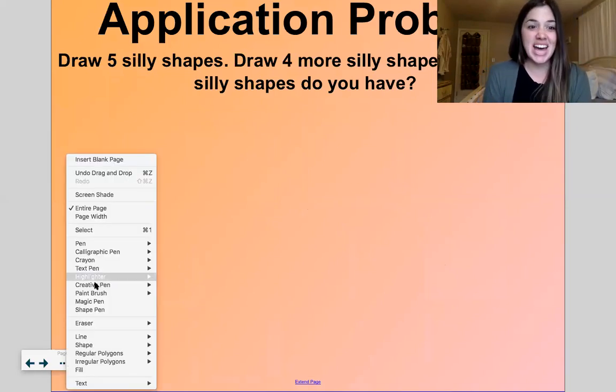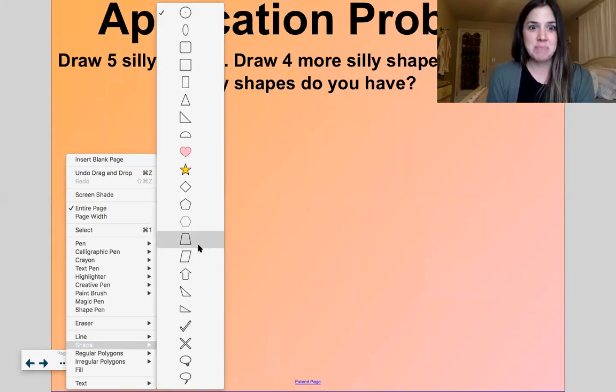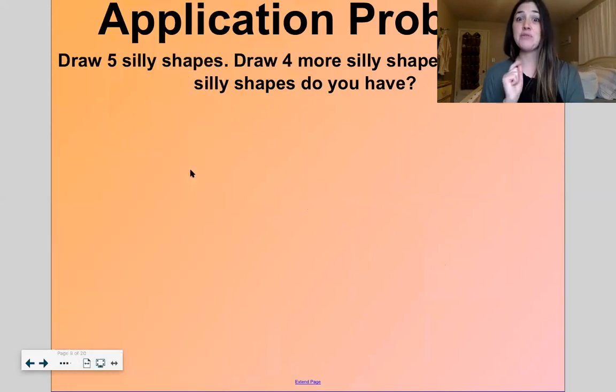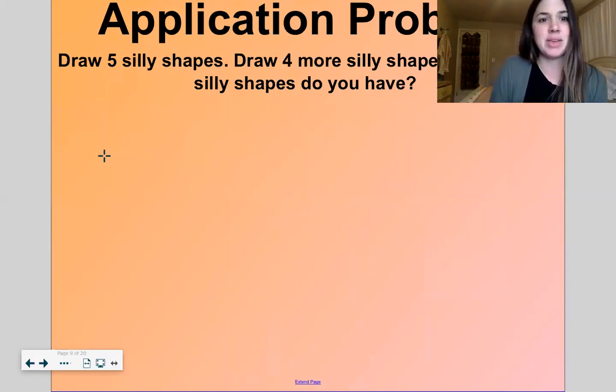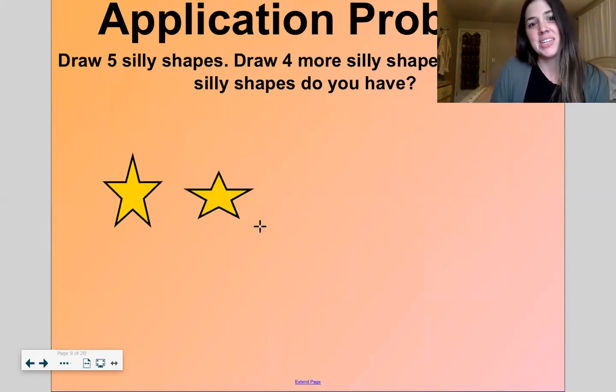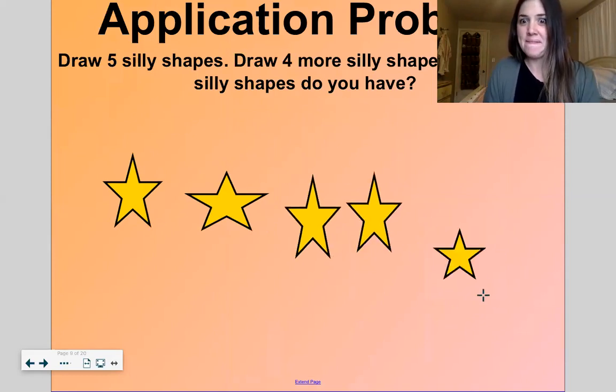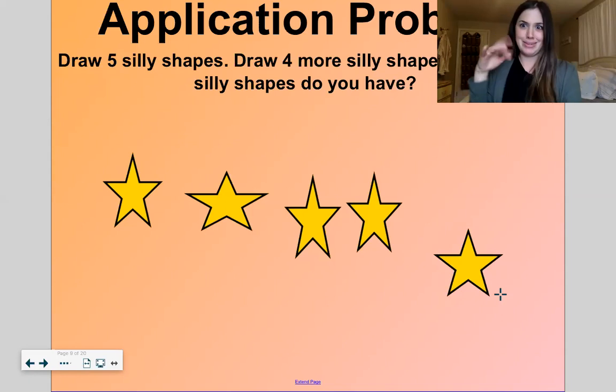It says draw five silly shapes and four more silly shapes. Okay, let's start with just five. Okay, count with me. One, two, three, four, five. Okay, I drew five kind of different shaped or different sized stars.